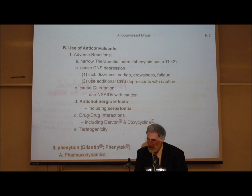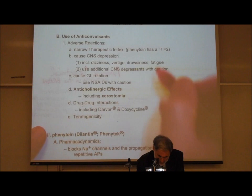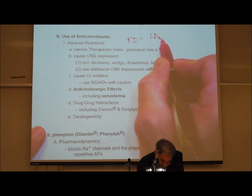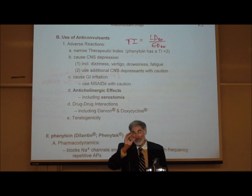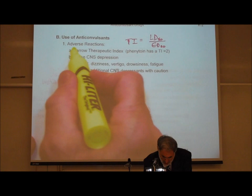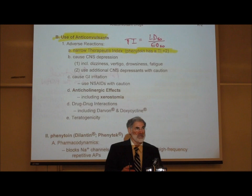On page K2, the anticonvulsant drugs. When we first learned about evaluating drug safety using the therapeutic index — the ratio between the LD50 and the ED50 — some of the drugs that have the smallest therapeutic index, and therefore the narrowest margin of safety between the therapeutic dose and the lethal dose, are anti-epileptic drugs. These anticonvulsants generally have a very narrow therapeutic index, not surprisingly, since they affect the brain in a powerful way.